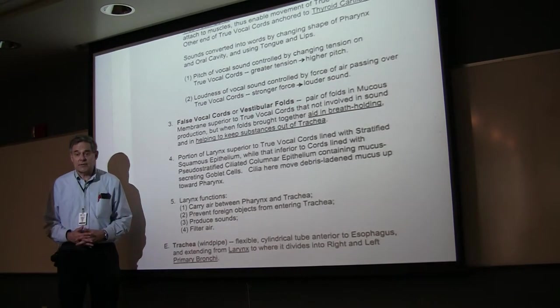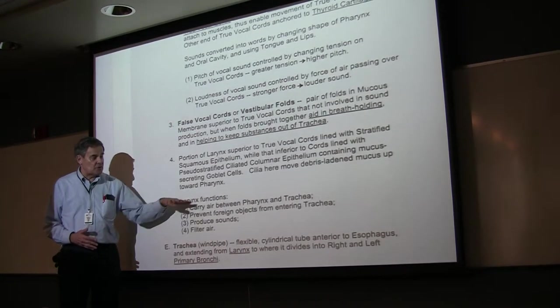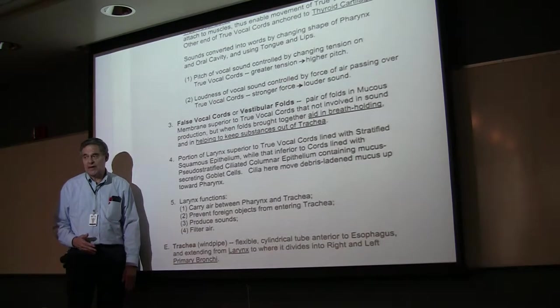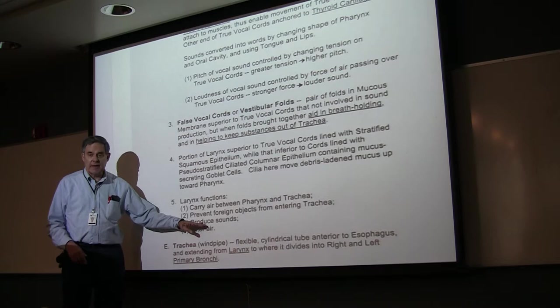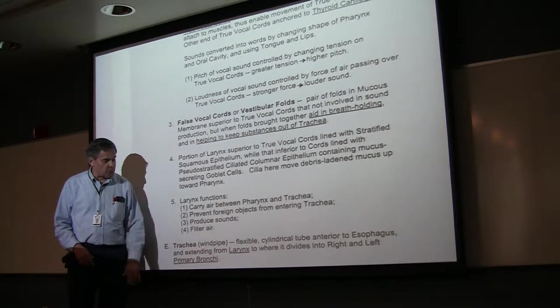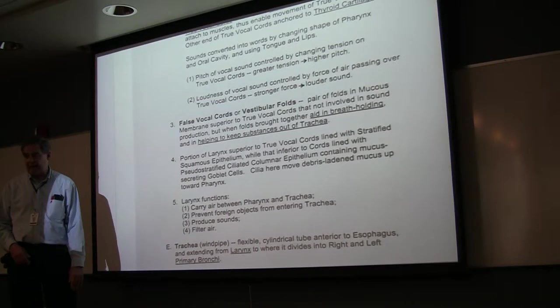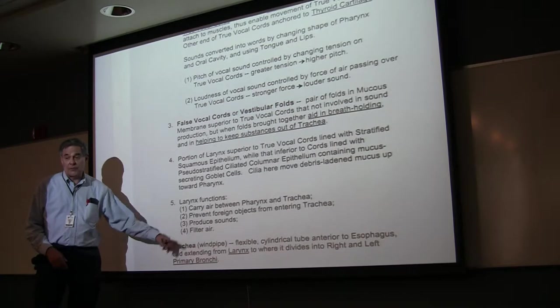The larynx, since it lies between the throat or pharynx and the trachea, carries air between them. It helps to keep things from going down into the trachea. And also because of the vocal folds or true vocal cords, it produces sounds. Because of the pseudostratified ciliated columnar epithelium in the inferior part, it helps to filter air as well.